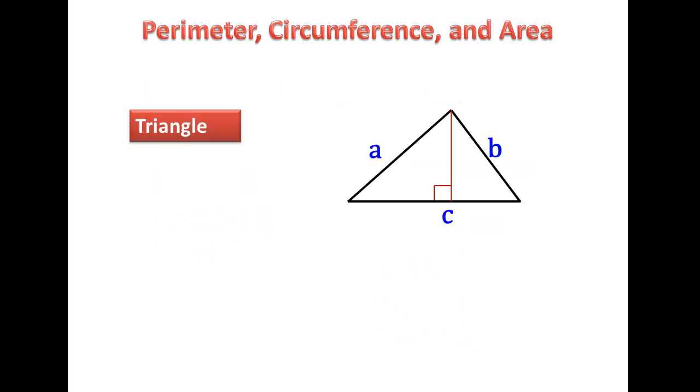Now let's look at the triangle. The formula for the perimeter of the triangle, we would take each side - A plus B plus C, add them up, and that would give us the perimeter. And then the area is 1 half base times the height. Let's plug some numbers in.